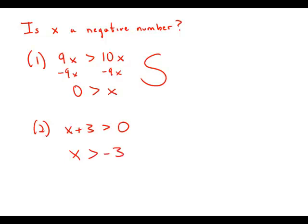So x could be a positive number or it could be a negative number that just has a magnitude less than 3. It could be negative 1 or negative 2, something like that.